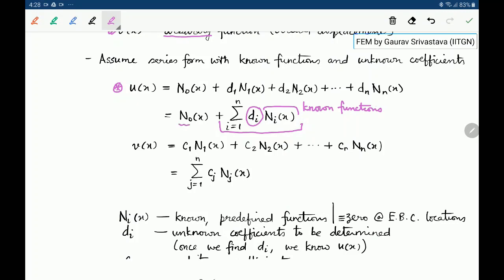And this N₀ of X is a special function which is only used to ensure that U of X satisfies the Dirichlet condition or the essential boundary condition.